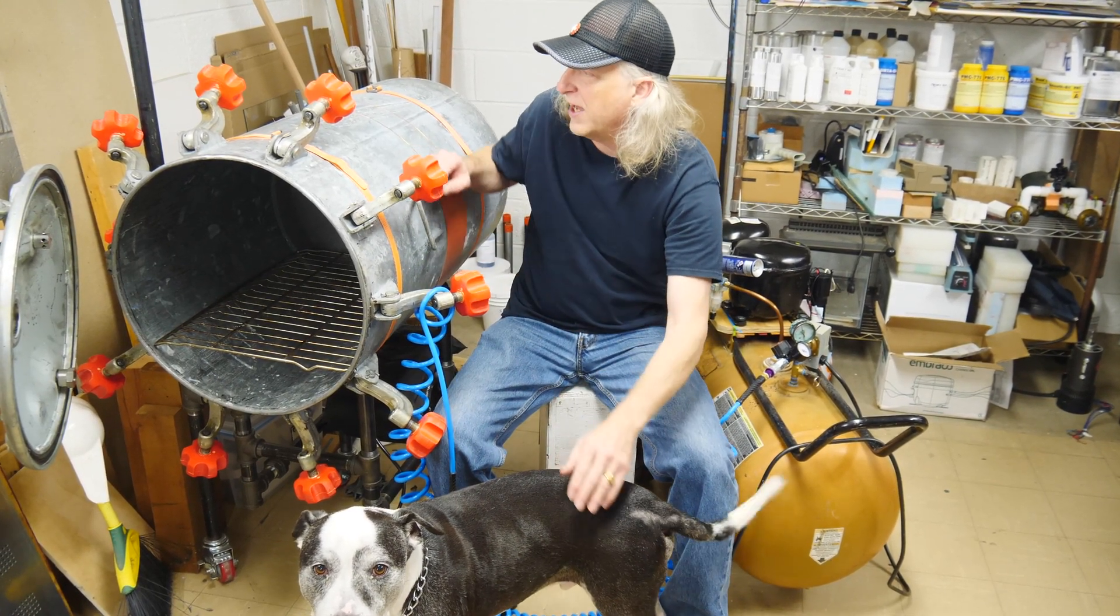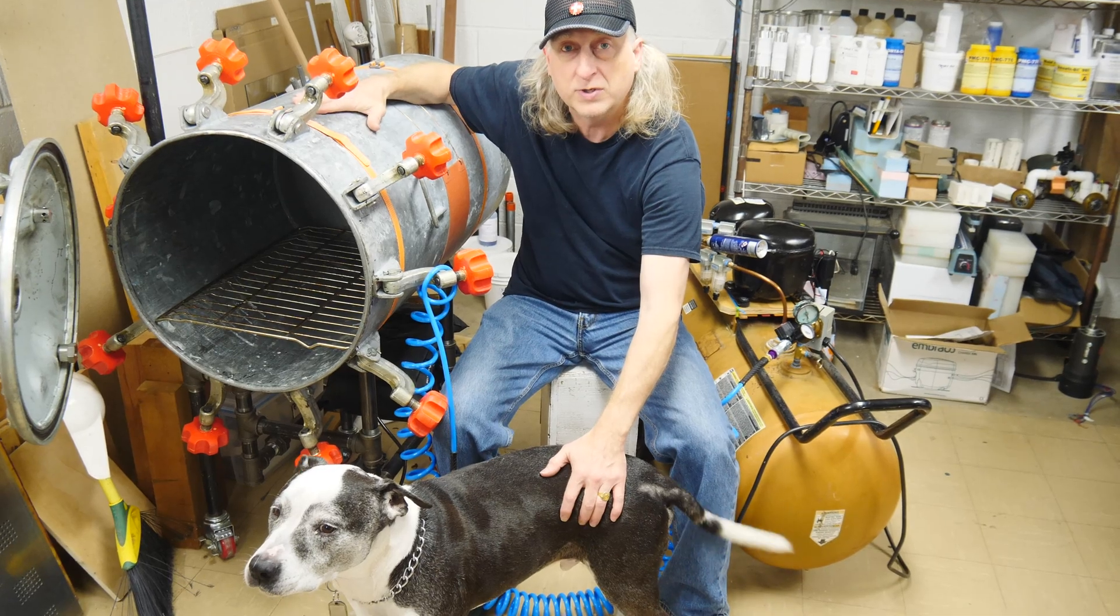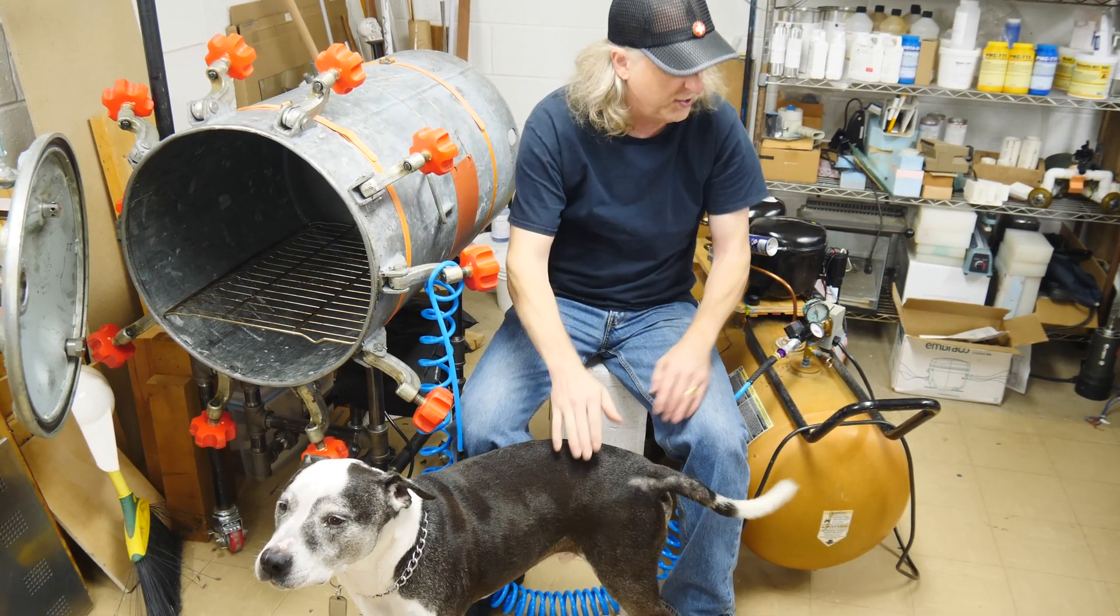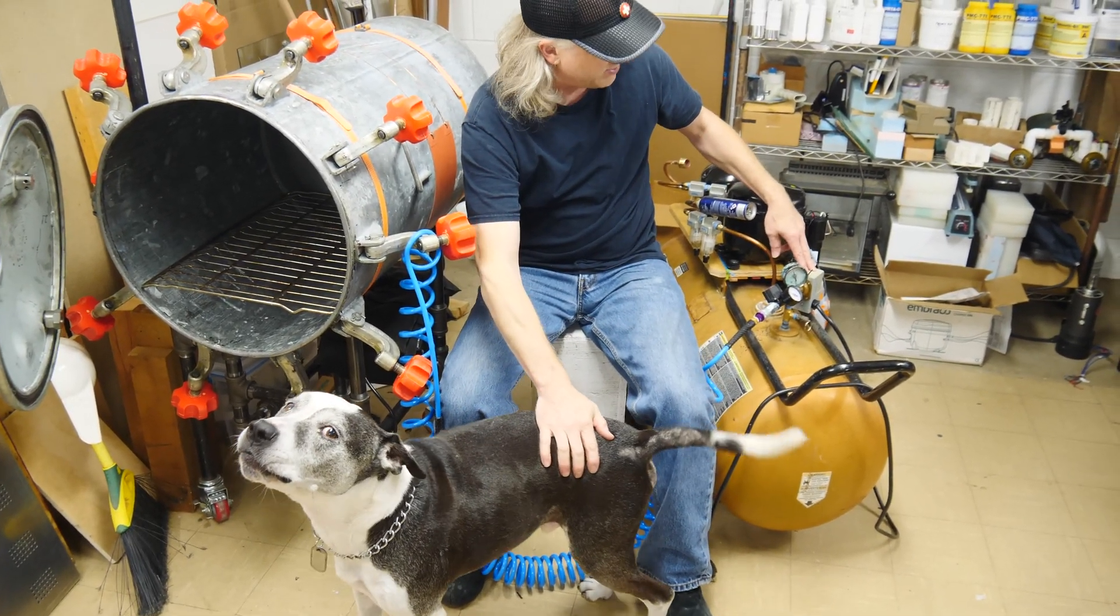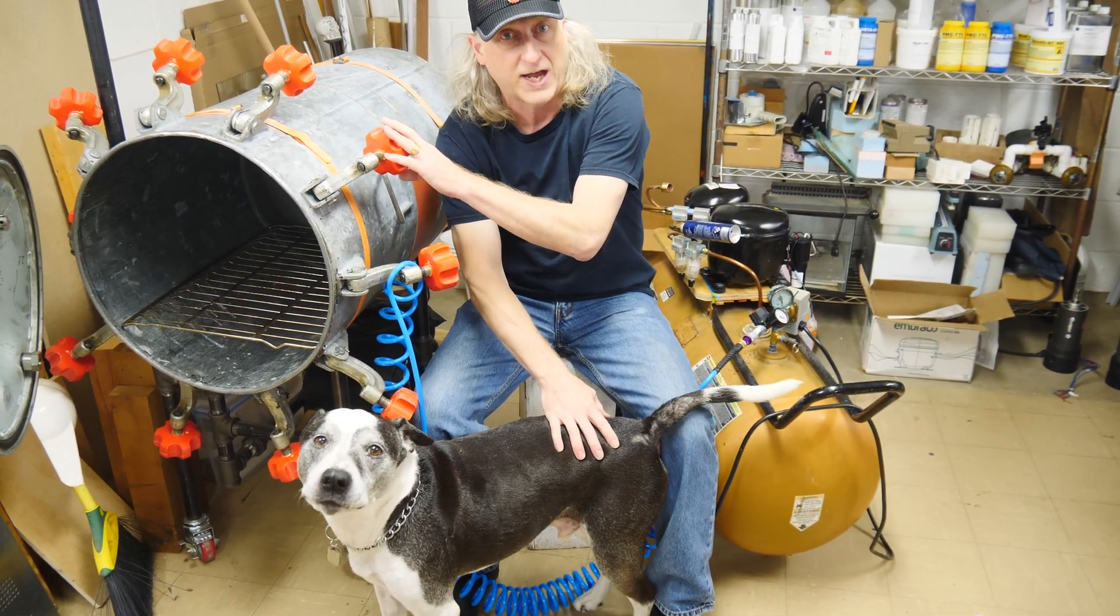This is the 30 gallon pressure tank where we pressure cast all our really large parts. This is the 33 gallon compressor that supplies the air to the tank when we do the pressure casting.